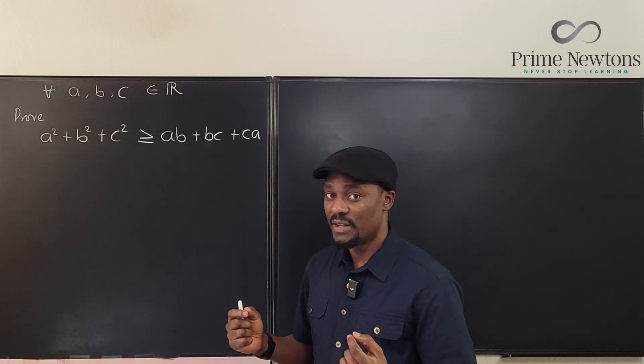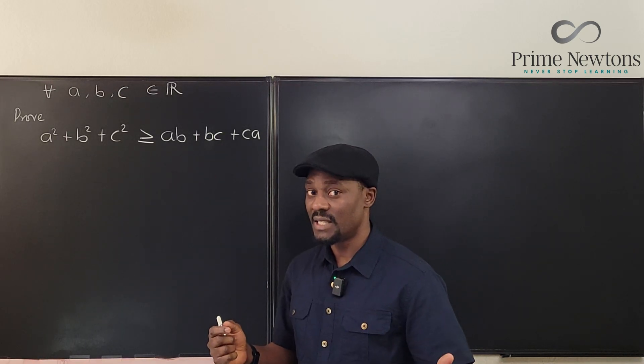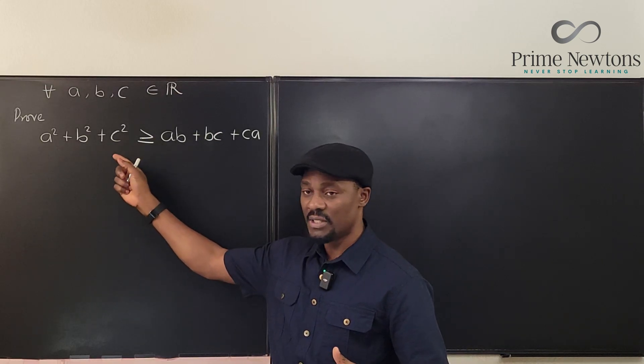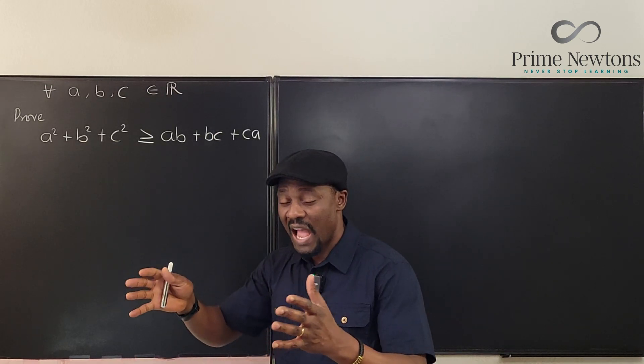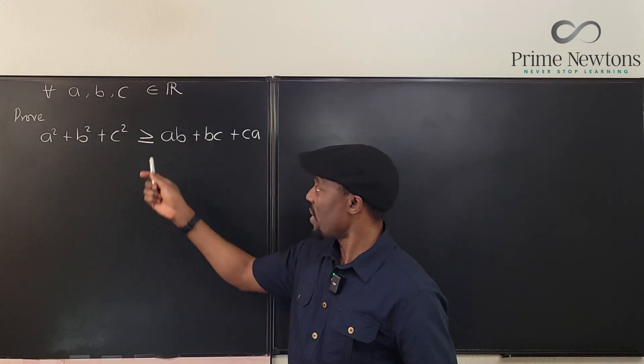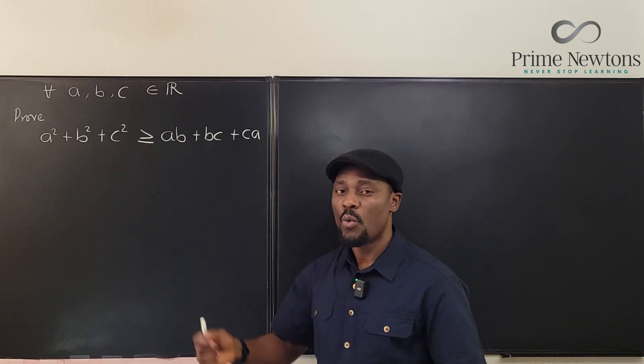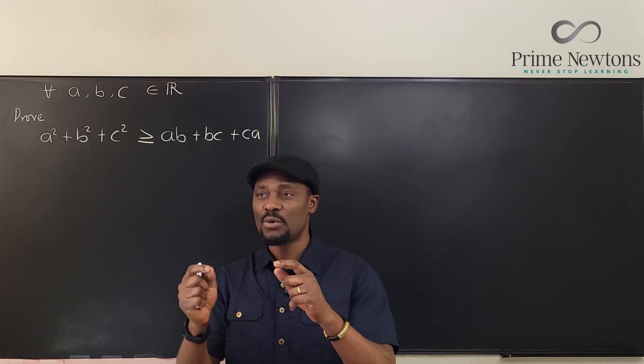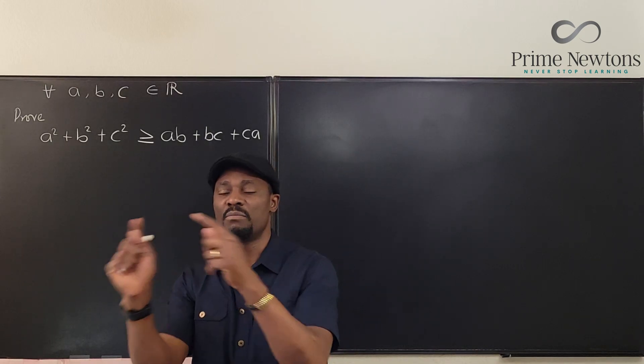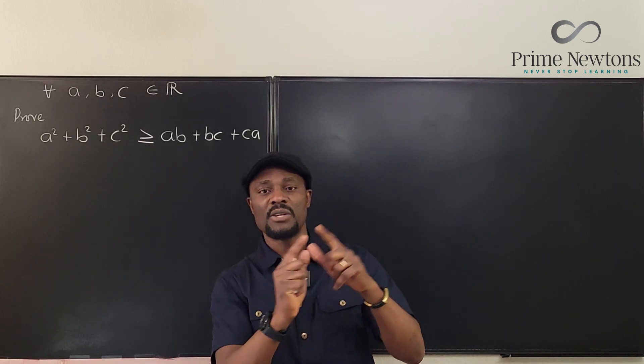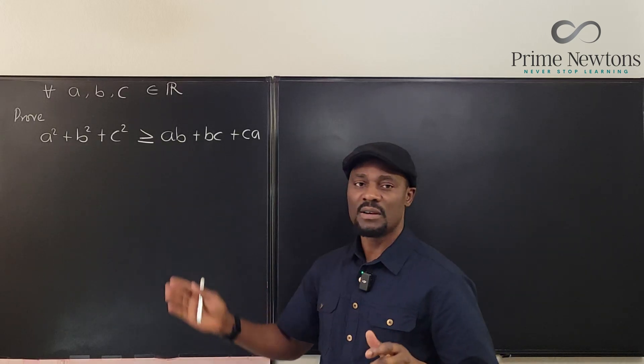So if the numbers are A, B, and C, and you square A, you square B, you square C, the answer you get when you add up all the answers has to be greater than or equal to what you would get if you were not actually squaring, but you picked two numbers and multiplied them, another two combination, another combination of two, and that's what we have here.